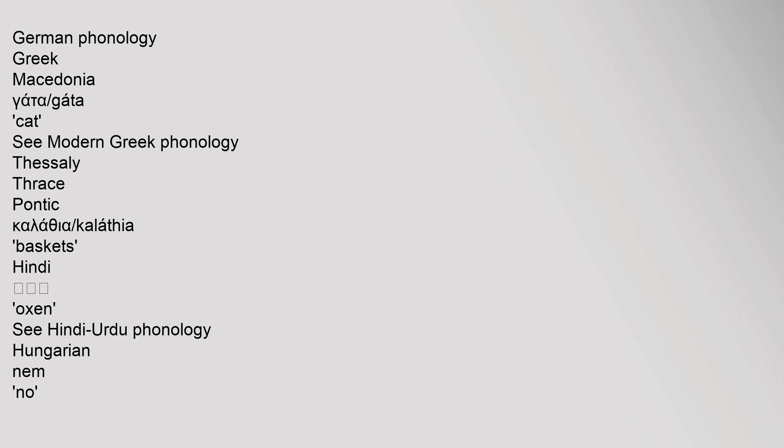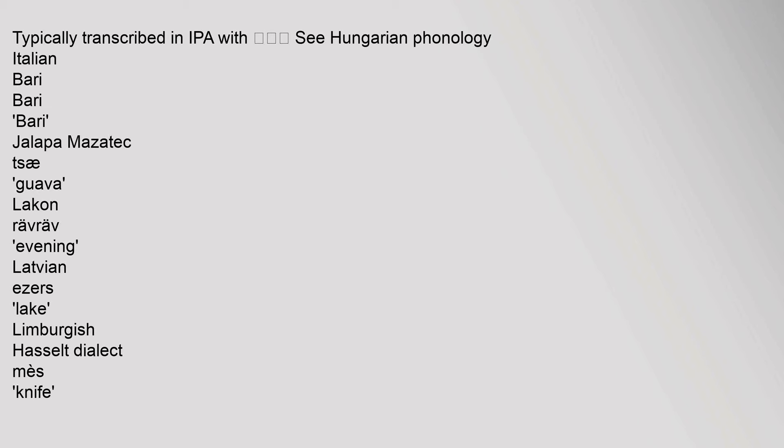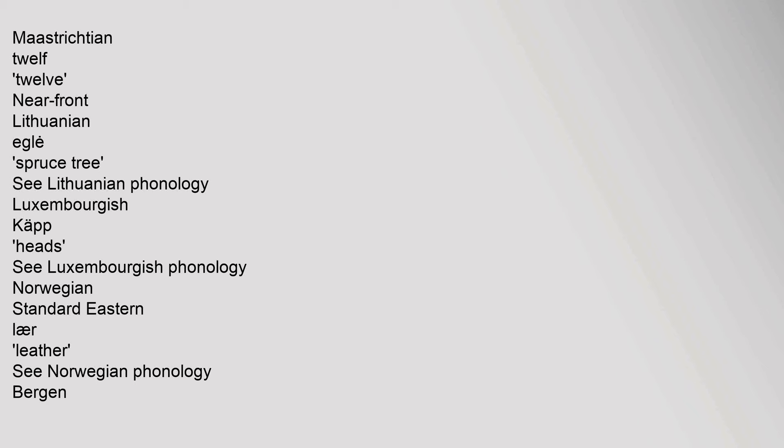Italian: Bari. Jalapa Mazatec: 'saai' (guava). Lakan. Latvian: 'ezers' (lake). Limburgish Hasselt dialect: 'mies' (knife). Maastrichtian: near-front. Lithuanian: 'eglė' (spruce tree); see Lithuanian phonology. Luxemburgish: 'Käpp' (heads); see Luxemburgish phonology.